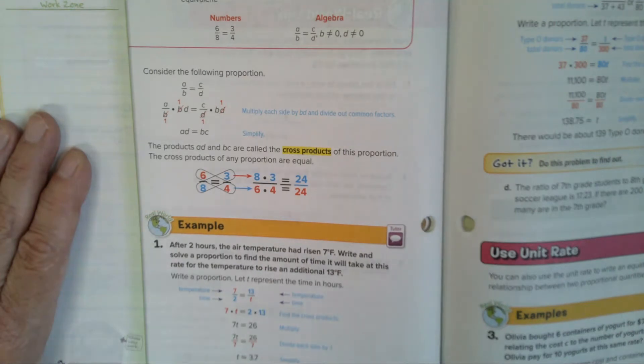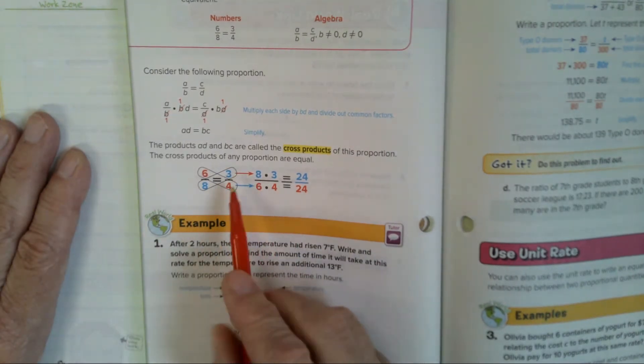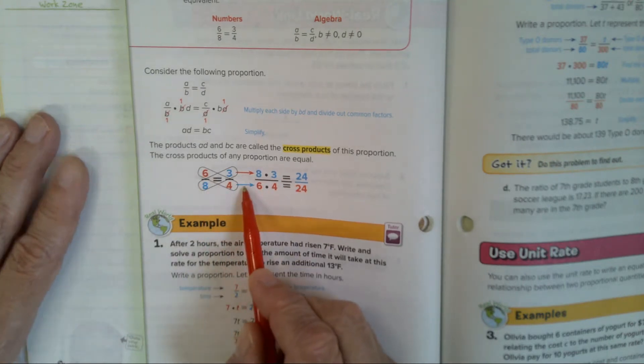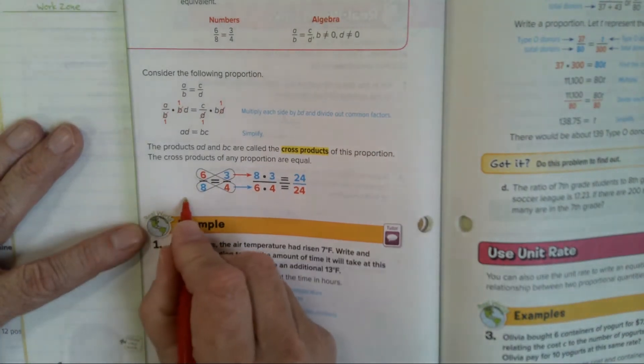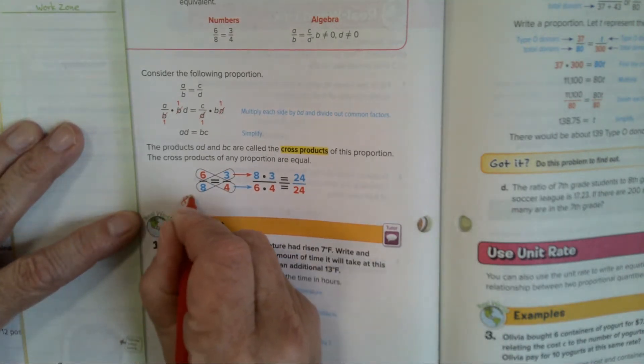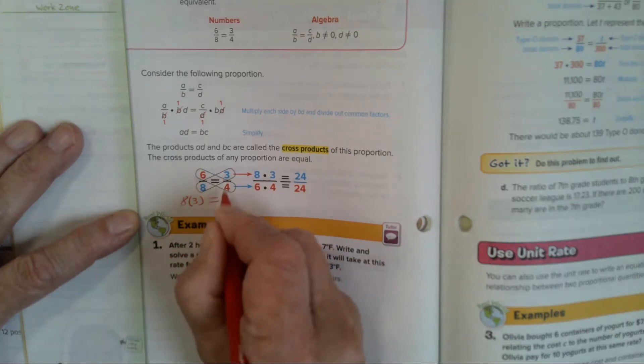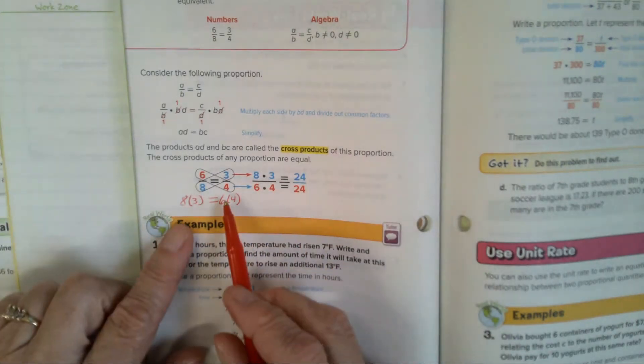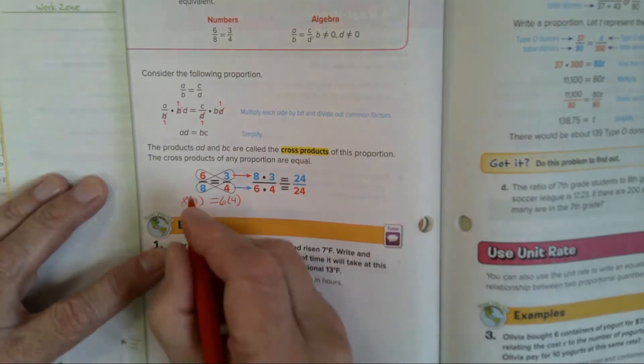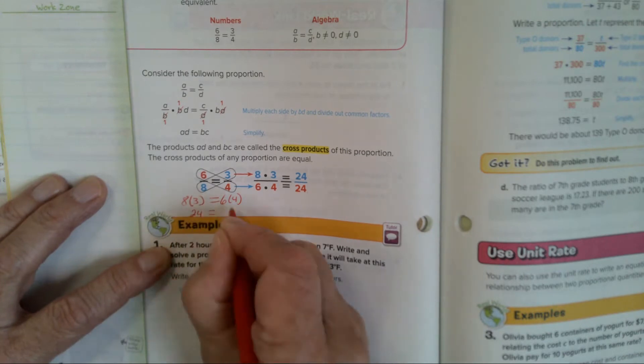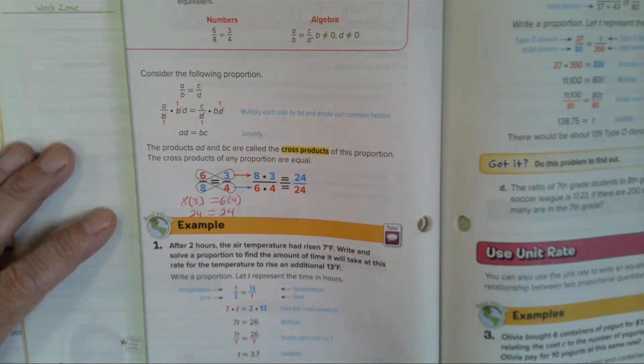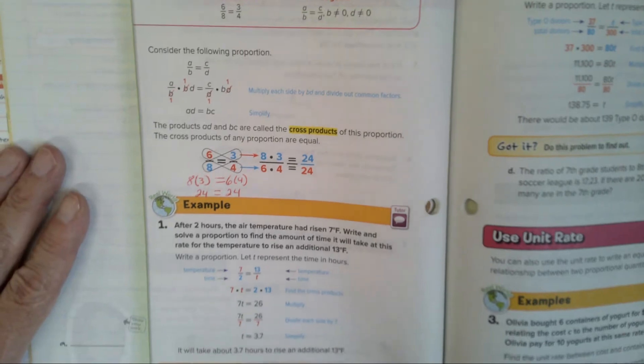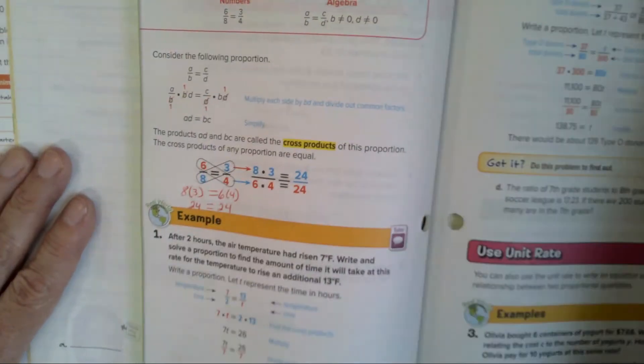That's how it is in algebra. Probably a little cloudy. It's not making a lot of sense. Well, let's do it with numbers. The products A, D, and B, C are called the cross products because you cut across to get to these numbers. You cut across and you multiply. The cross products of any proportion are equal. So 8 times 3 will equal 6 times 4. I don't like how they set this up like this. I would normally set it up like this. And kids, I want you to write this on your paper. Write down 8 times 3 equals 6 times 4.